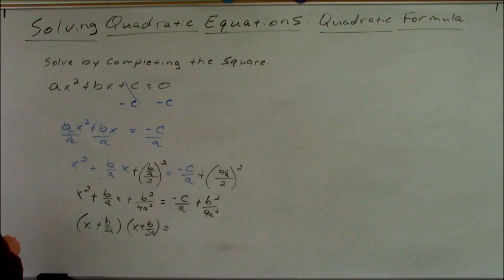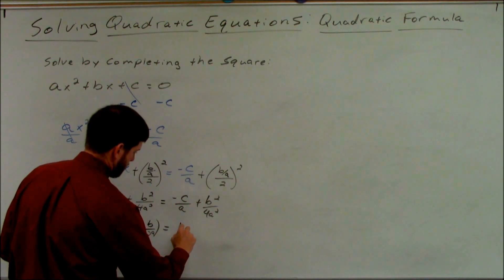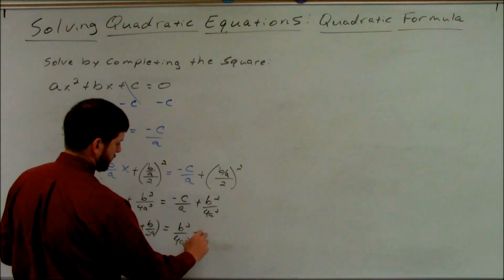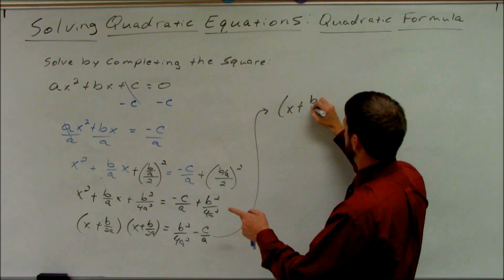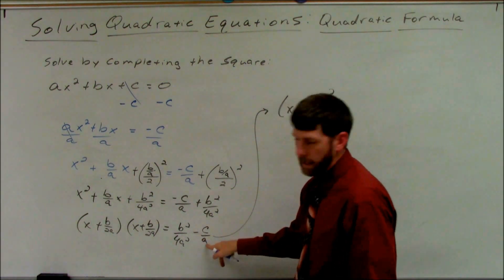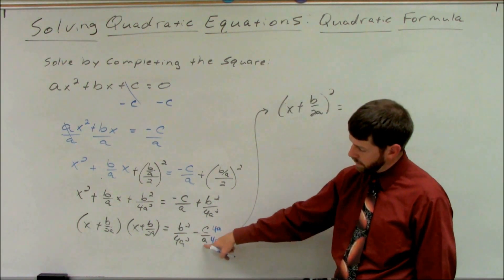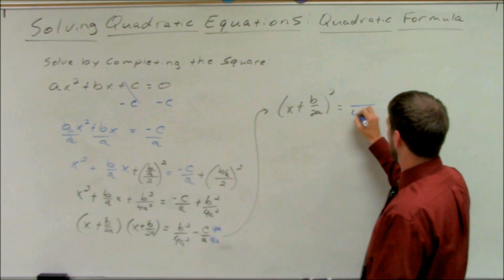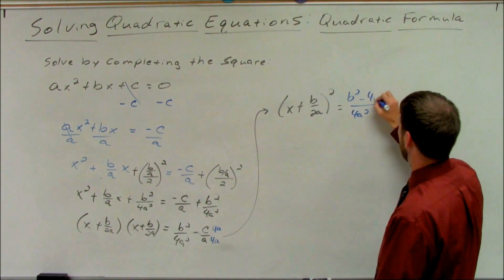Let's clean up the right hand side a little bit more. I'll write b squared over 4a squared first. If I want to put these together I need to make a common denominator. So the left hand side is (x plus b over 2a) squared. For the right hand side, they already have an a as a common factor of the denominator, so the right hand denominator just needs a 4a. If I do 4a times a that makes 4a squared. If you do it to the denominator, do it to the numerator. So the common denominator is 4a squared and we get b squared minus c times 4 times a, or we'll call it 4ac.